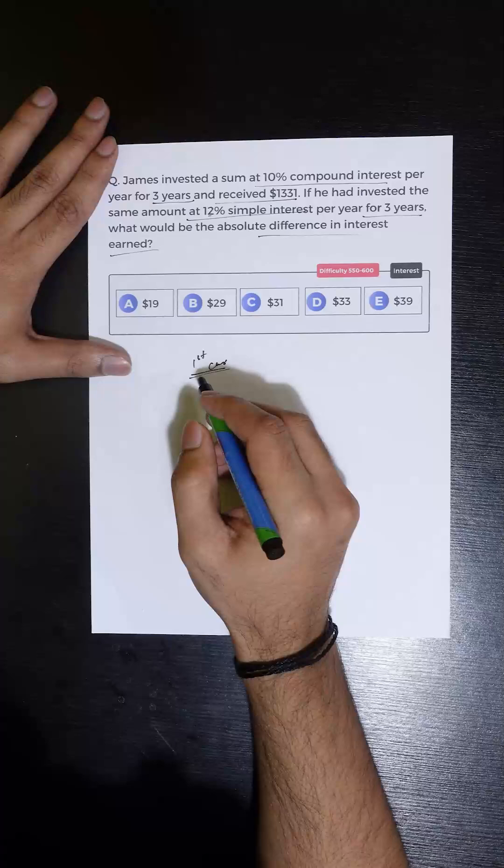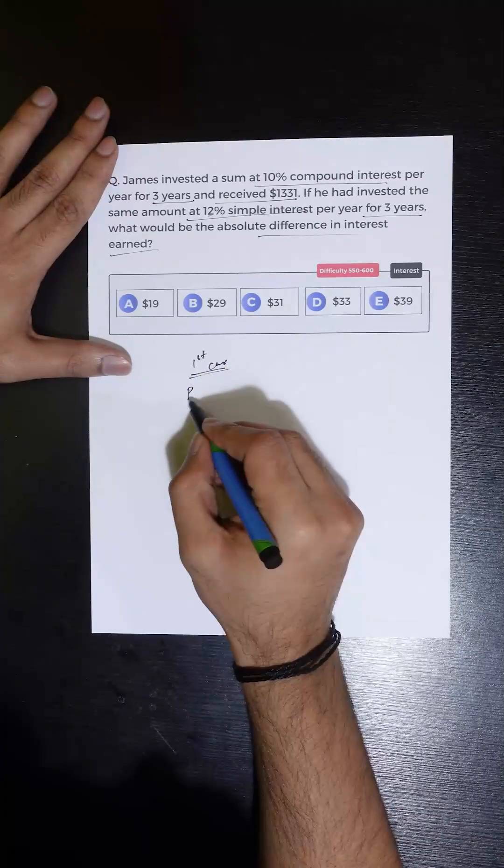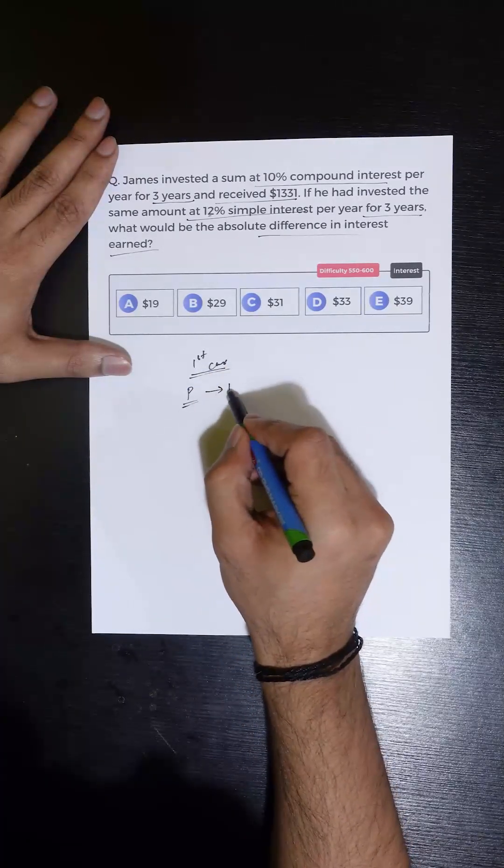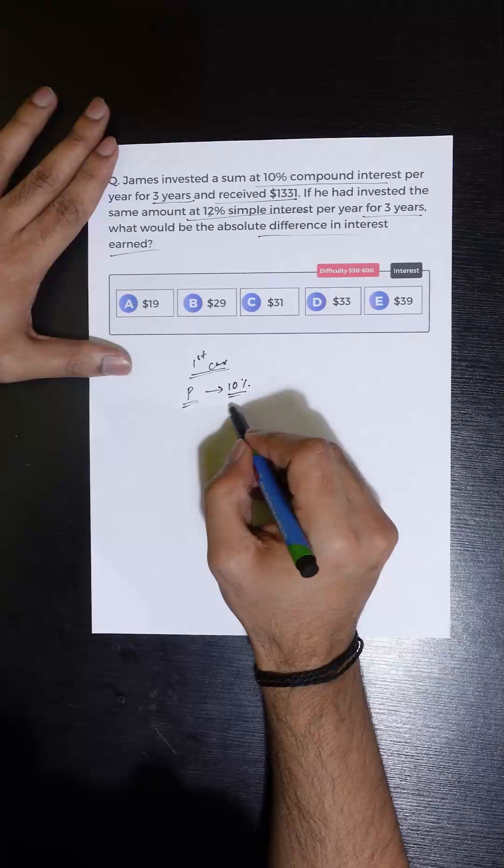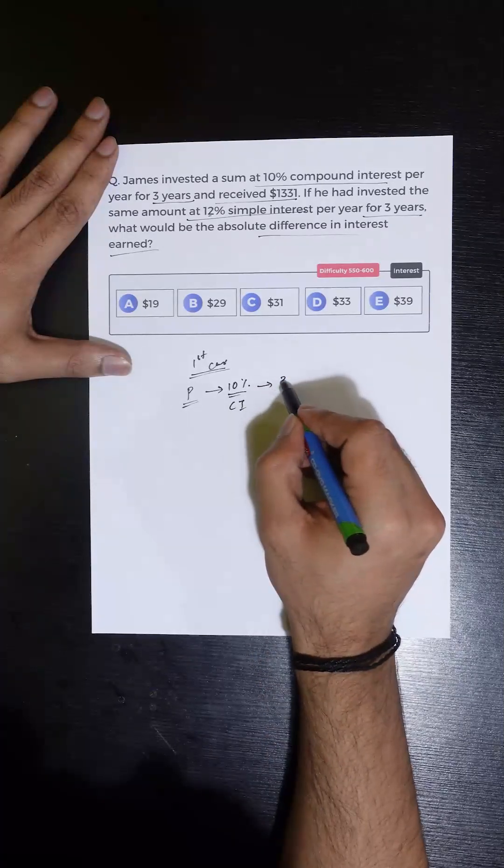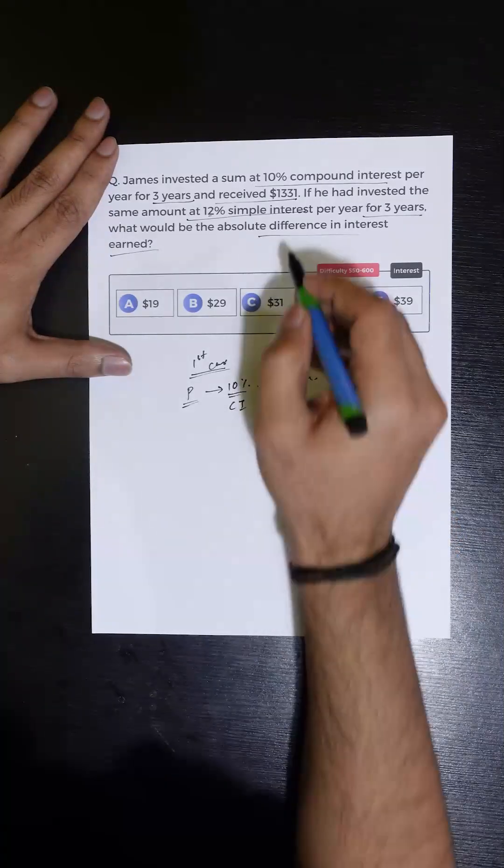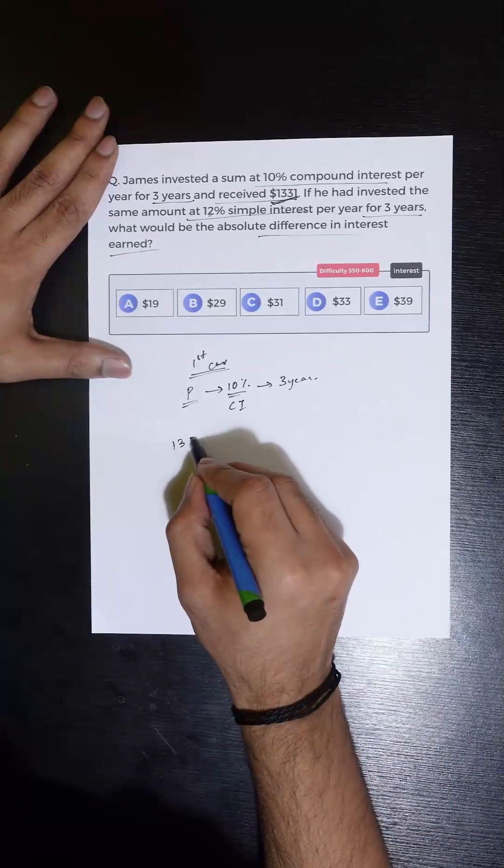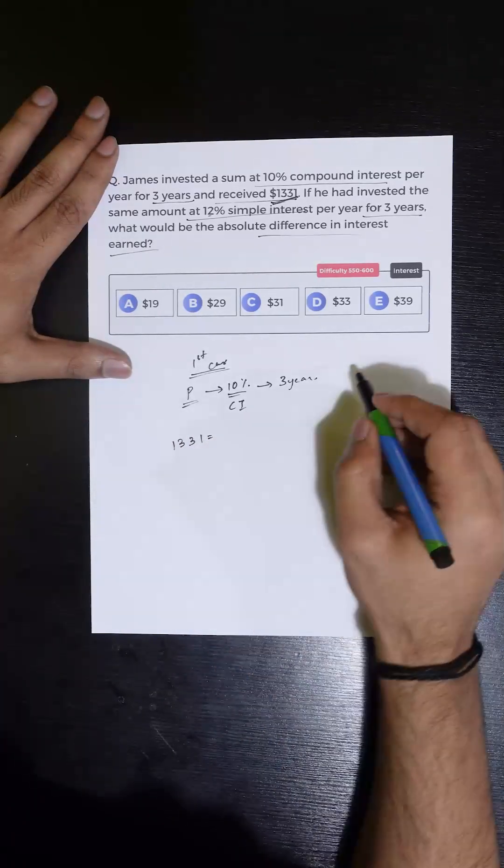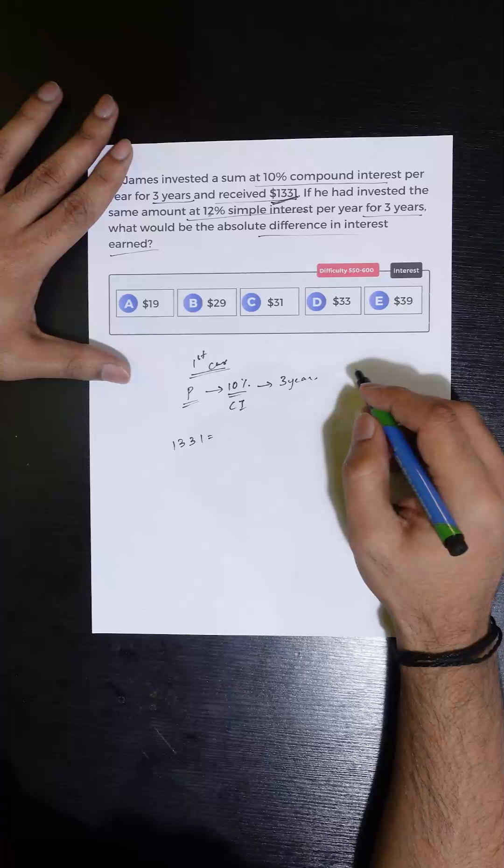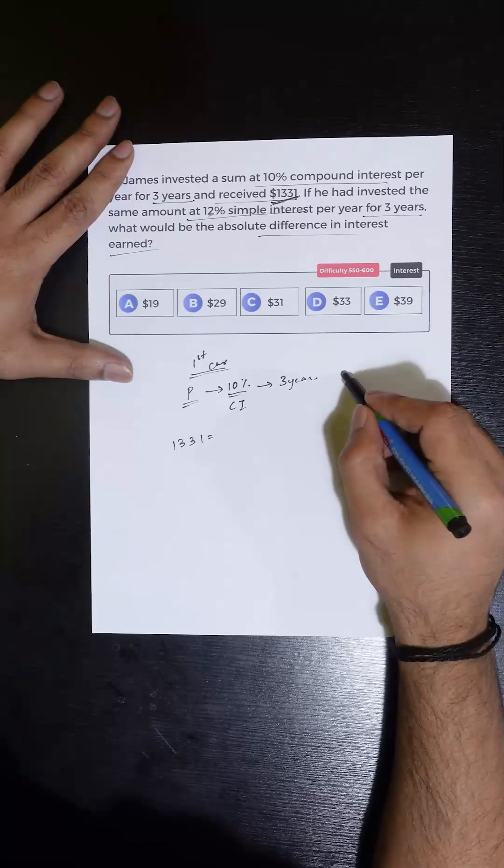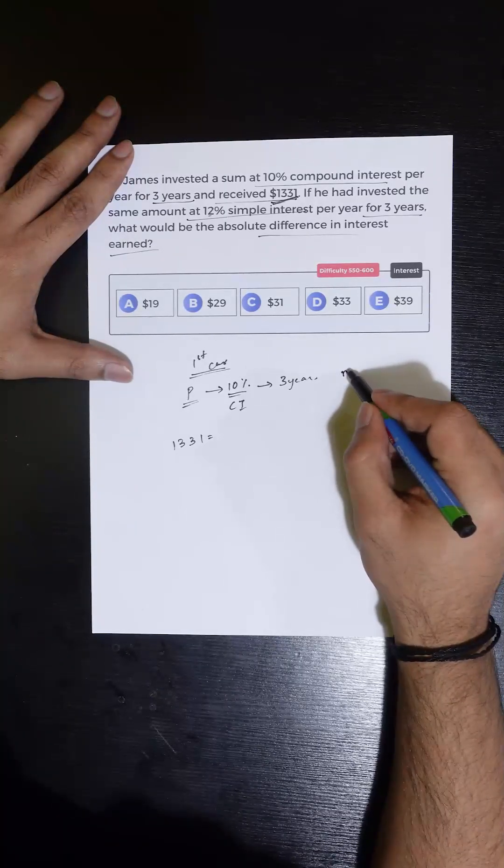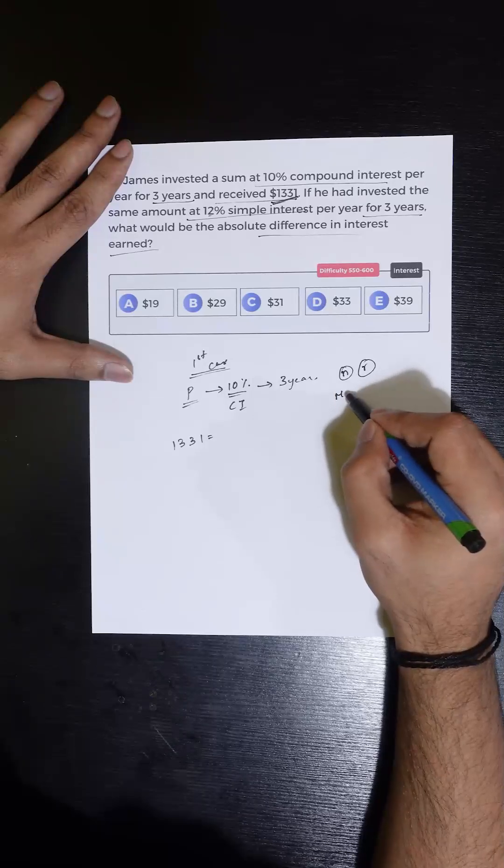We are given that James invested a sum P at a compound interest rate of 10% for three years and received a total of 1331. So 1331 is the total money received. We know that when a sum is invested in compound interest, after n years at a rate of r, the money becomes P times (1 + r) to the power of n.